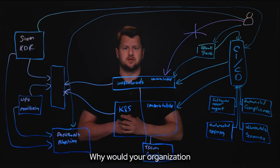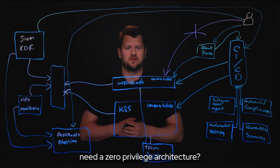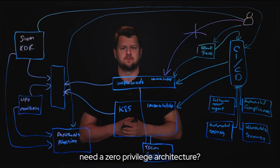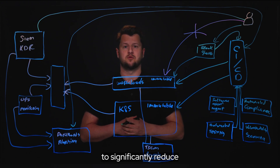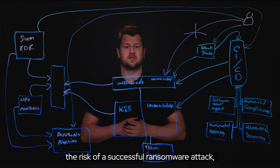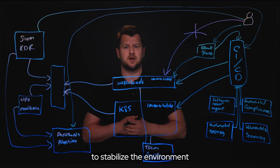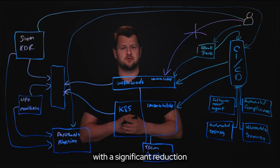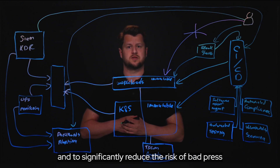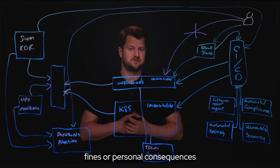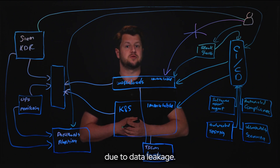Why would your organization need a zero-privileged architecture? There are a few reasons: to significantly reduce the risk of a successful ransomware attack, to stabilize the environment with a significant reduction of operational errors, and to significantly reduce the risk of bad press, fines, or personal consequences due to data leakage.